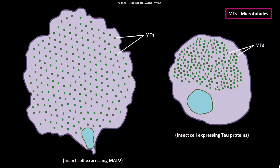These are insect cells transfected to express MAP2 and Tau protein. Note that insect cells expressing MAP2 have larger space between microtubules than insect cells expressing Tau proteins.